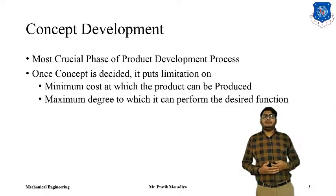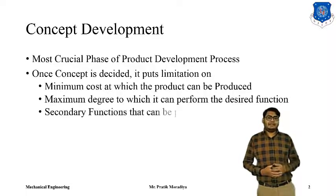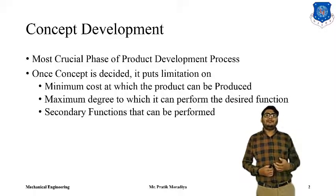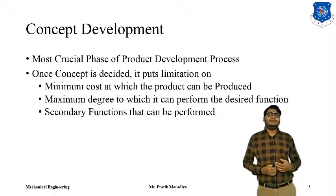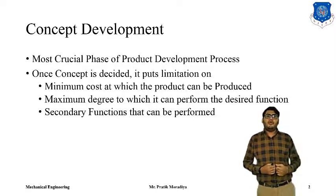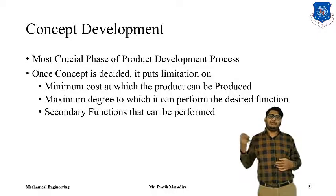The functionality of the product will be finalized as well. If your concept is finalized, the functionality of the product will also be finalized, including secondary functions. Secondary functions are add-ons to the functions which the customer actually desires. The primary functions are the necessary functions — for example, if you are using a mobile phone, calling and SMS will be the primary functions. But extra features like camera, GPS, and features incorporated with IoT are secondary functions. These secondary functions will also be finalized in the concept development process itself.